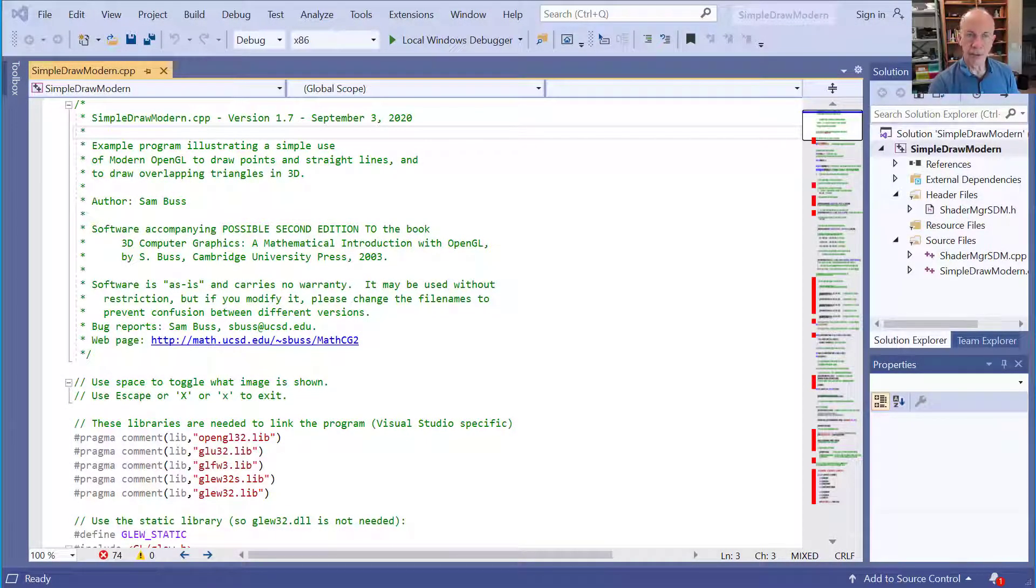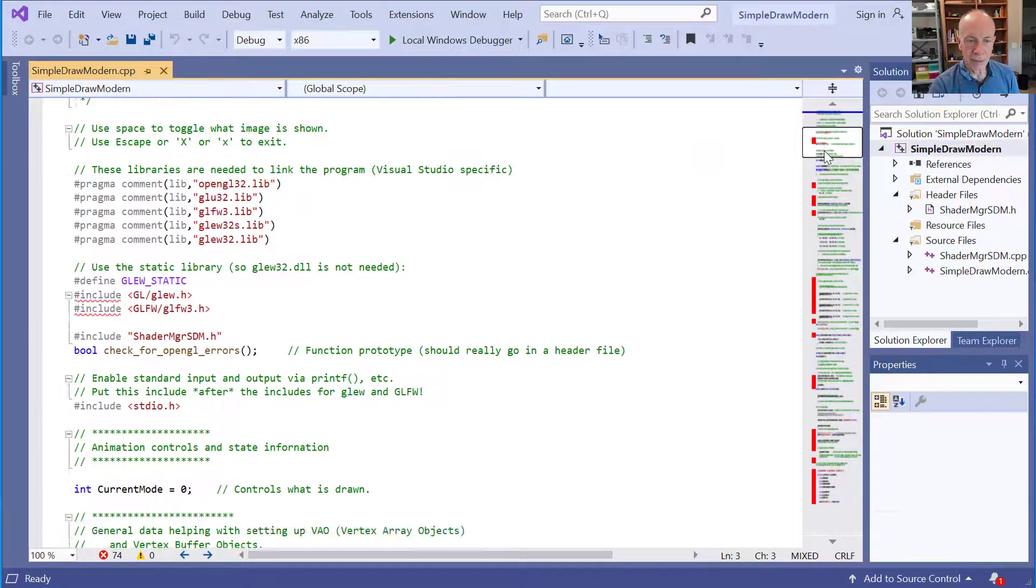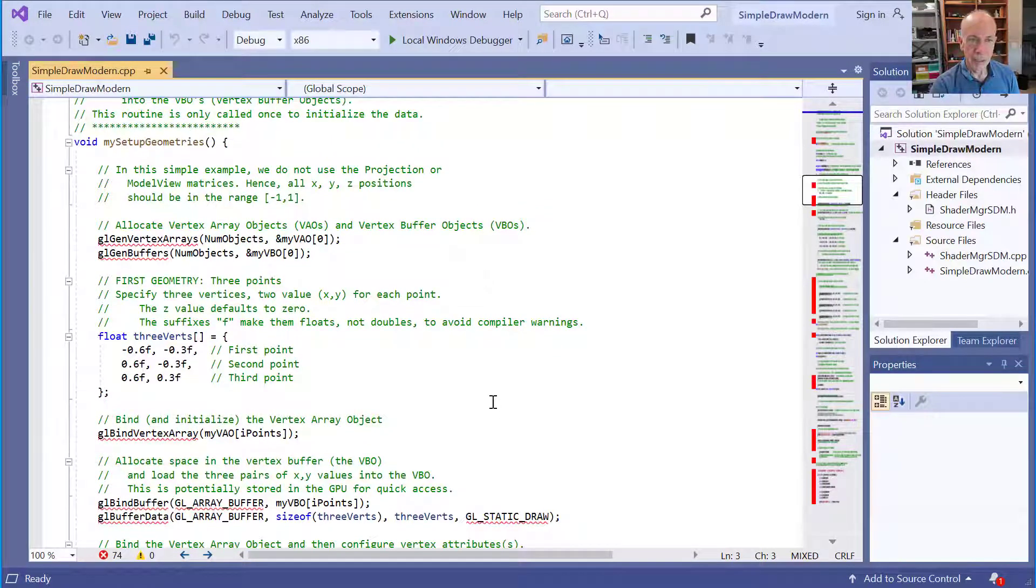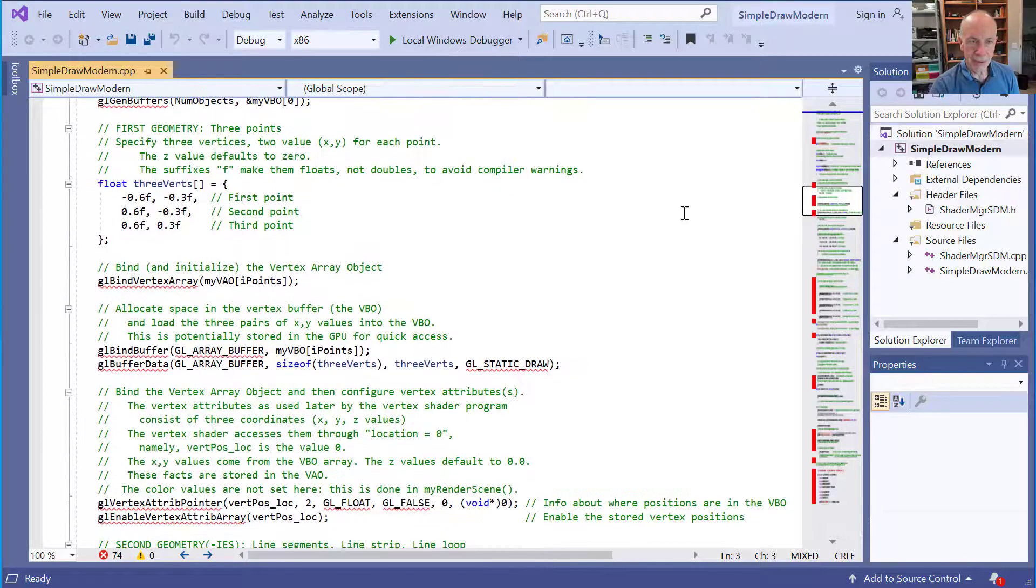So first we'll look at the Simple Draw Modern program, and how it uses vertex attributes that are per vertex, as well as generic. So let's scroll down a little bit to find where it sets up the data for the points. There's three points. There's a lot of comments here, but we'll just scan past them. We first set up an array in the C++ program with the position data for the points. We call glBindVertexArray to select the VAO. We call glBindBuffer to select a VBO. We call glBufferData to load the position data from the array 3Verts into the buffer. We then call glVertexAttribPointer, giving it vertPosLoc as the name of the, or the location number for the per vertex data. And this is to tell the VAO where the data is stored in the VBO. And then glEnableVertexAttribArray tells the VAO to actually use that data. It enables the use of the per vertex vertex attributes.